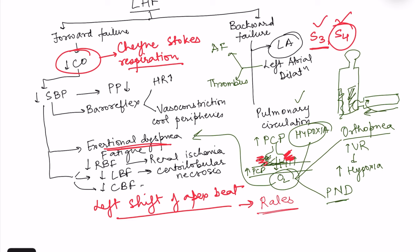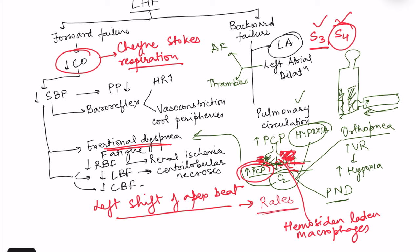In pathology, hemosiderin-laden macrophages can appear because the marked rise in pulmonary capillary pressures can cause capillary rupture and leakage of blood into the interstitium. Macrophages present in the alveoli capture this blood and become hemosiderin-laden. These are the various signs and symptoms of left heart failure.